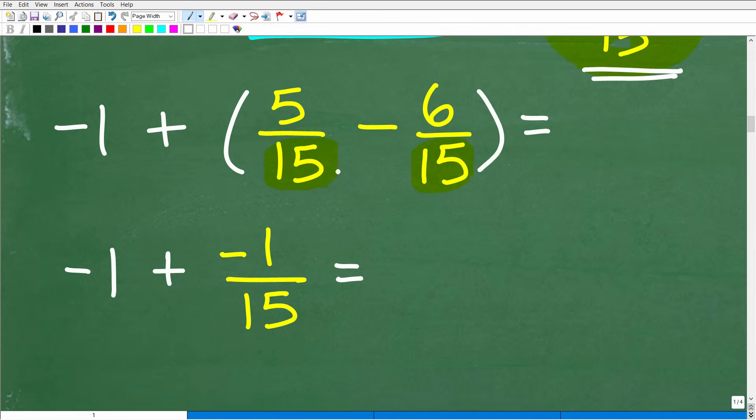Anytime you have the same denominator when you're adding or subtracting fractions, all you need to do is simply add or subtract the respective numerators. In this case, it would be five minus six over 15. Five minus six is the same thing as five plus negative six, which of course is negative one or negative one over 15.